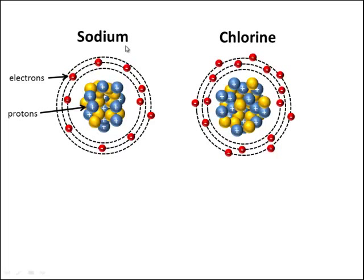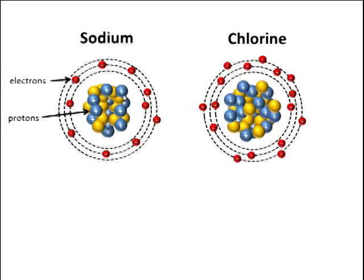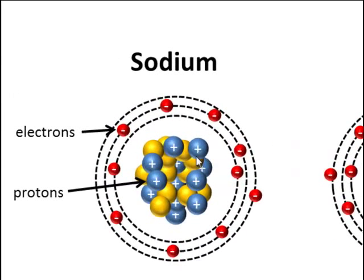So these are two atoms, sodium and chlorine. They both have a nucleus that contains protons, which are positively charged, and neutrons, which don't have a charge at all. And then spinning around in what are called shells are these electrons. Electrons are negatively charged.